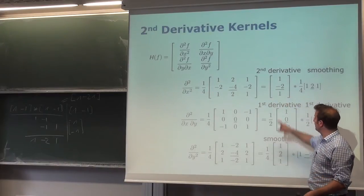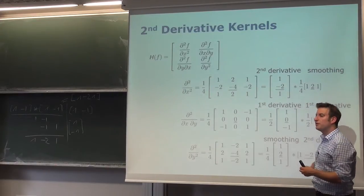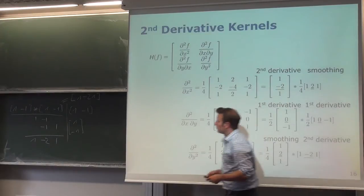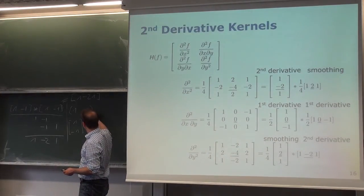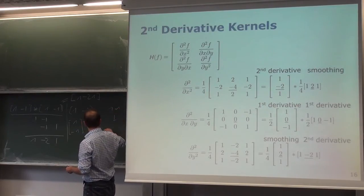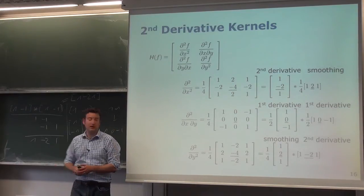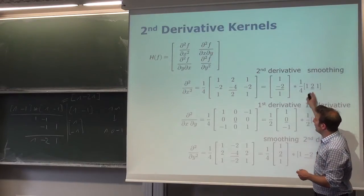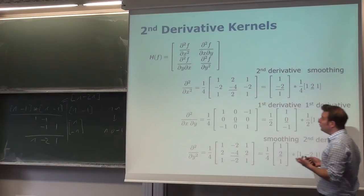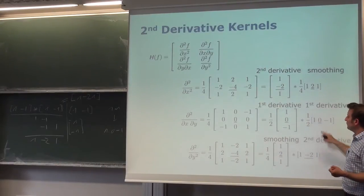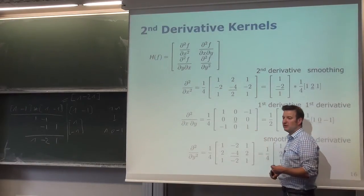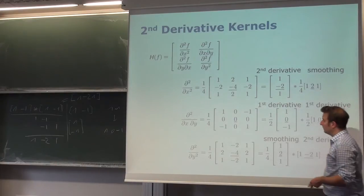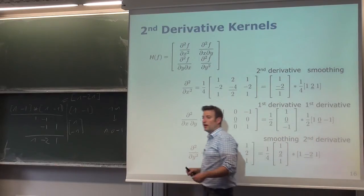Each Hessian element is computed by taking the second derivative kernel in the direction of interest combined with smoothing in the other direction. For example, the second derivative in x uses a 1D second-derivative kernel in x with smoothing in y. The mixed derivative applies the first-derivative kernel once in each direction, each smoothed once. The y-direction element mirrors the x-direction element with axes swapped.